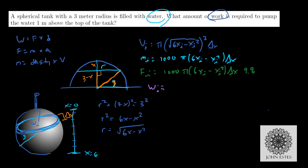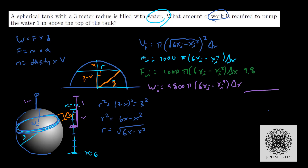So now I think we're ready for our work. My wi is going to be my force times some distance. I have 9,800 pi times (6xi minus xi squared) delta x times a distance. The distance that this water coin has to travel is the value x, but remember we also have this 1 meter spout sticking out the top, so we have to travel one additional meter. Therefore the distance traveled is xi plus 1.